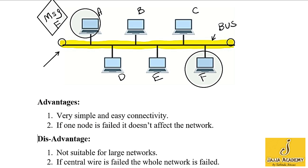Now let's discuss the disadvantages of bus topology. It is not suitable for large networks — bus topology is suitable only for small networks. If the central wire, also called the bus, fails, the whole network fails. As all nodes send their messages to this central wire, if this central wire is corrupted, communication is not possible.